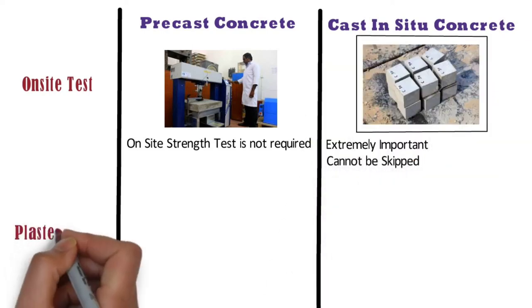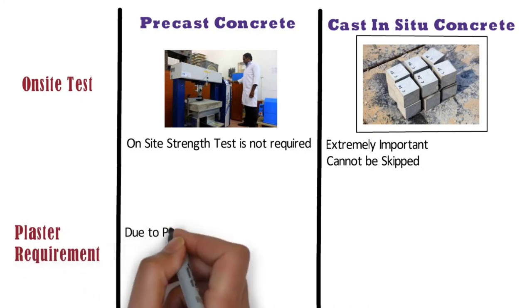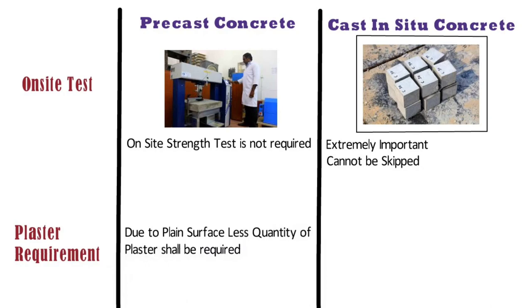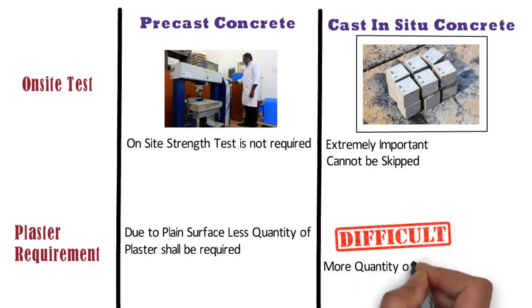On precast walls, due to the plain surface, less quantity of plaster shall be required as compared to cast in situ. On the other hand, in case of cast in place concrete construction, it is a little difficult to get a plain finish on walls. Hence, more quantity of plaster shall be required.